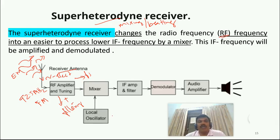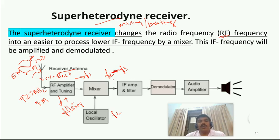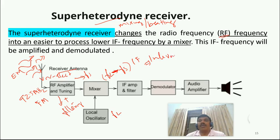The signal is then mixed with a locally generated carrier from the local oscillator. The mixer produces several frequencies, but the important one is the difference frequency: FL minus FS — that is, local frequency minus signal frequency. This difference is called the intermediate frequency, where IF stands for intermediate frequency.